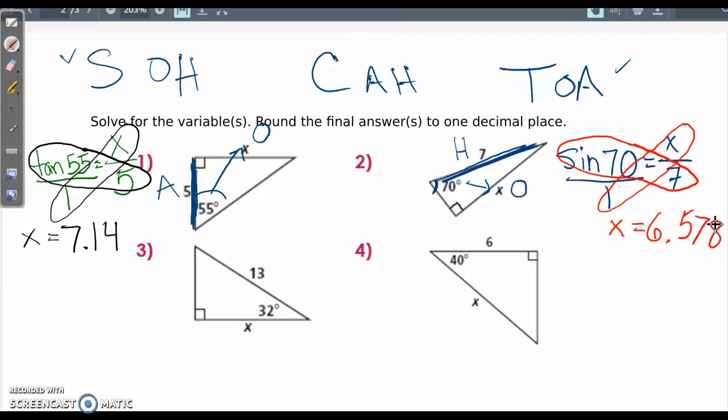Okay, try number three on your own. Pause the video and see if you get the same answer that I do. I got 11.025. Here I used cosine because we were given the adjacent or finding the adjacent but given the hypotenuse.